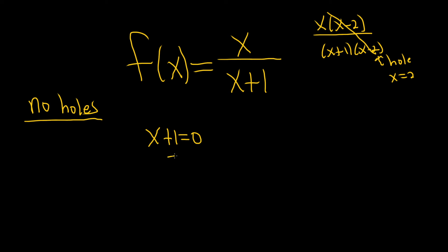So here you just subtract 1 from both sides, so you get x equals negative 1. And that's your vertical asymptote.